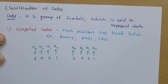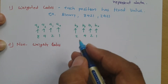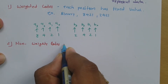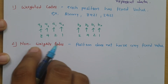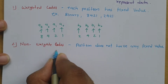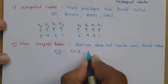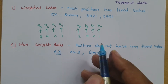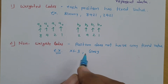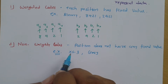The second category is non-weightage code. In a non-weightage code, we don't have a fixed value with respect to position. Examples of non-weightage codes are XS3 code and Gray code. I will explain all these codes in detail in separate sessions — here I am just giving you examples.